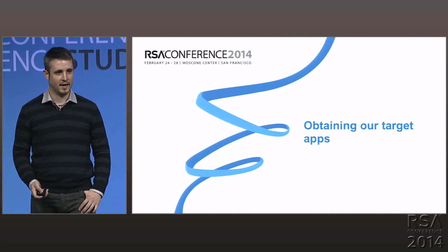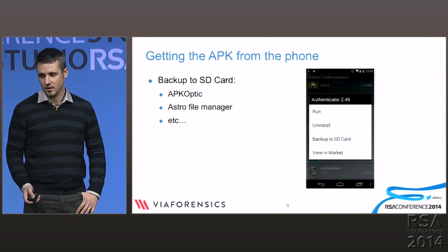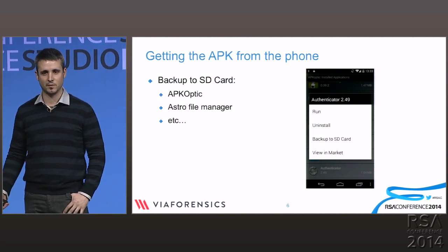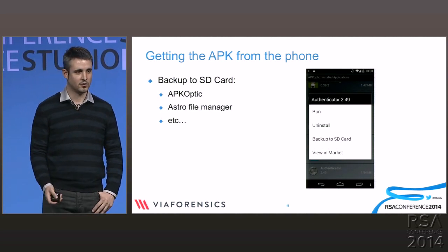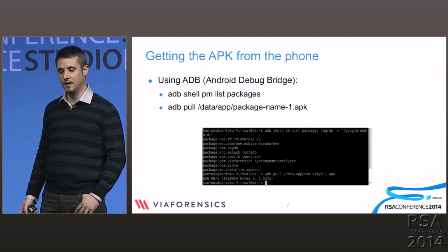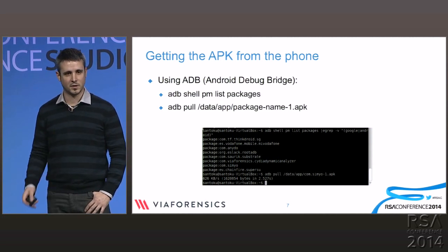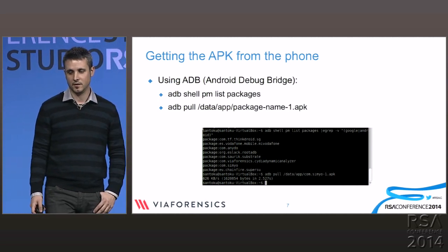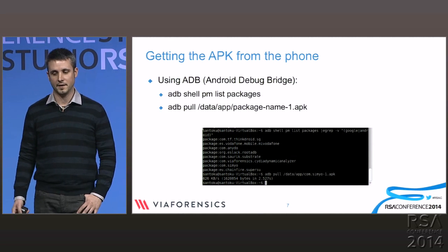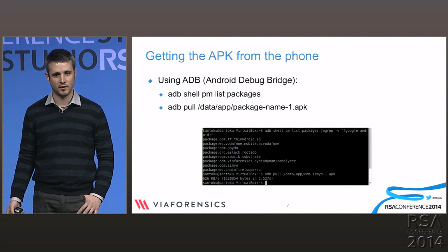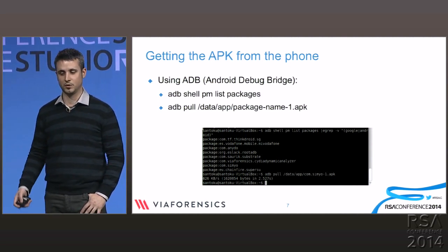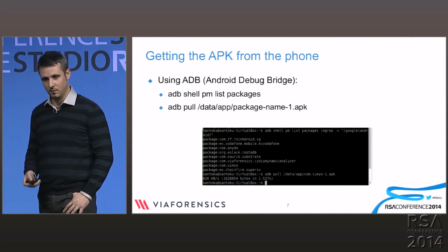Now that we know what an Android APK is, we need to get the APK of the application we want to reverse engineer. The easiest way is if you have the application installed on your device — you can use any application to backup apps to SD card, for example APK Optics or Astro File Manager. Another way is using the Android Debug Bridge. If you go into developer settings on your phone and enable ADB debugging, you can use the command line tool ADB, which comes with the Android SDK. With the command PM list packages you see all installed applications, and then you just pull the application from the data/app directory using the package name with .APK at the end.